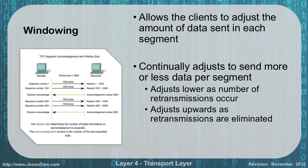The window size will adjust lower if more retransmissions have to occur. For instance, if I'm transferring a file and there's interference on the wireless signal and I have to retransmit, it's going to close the window and make it smaller, so I'll have to acknowledge more frequently. But if I have a good signal and I'm sending a lot of data fast with minimal retransmissions, it will adjust the window size open more to allow more data between each acknowledgement, reducing the overhead and increasing my workflow.